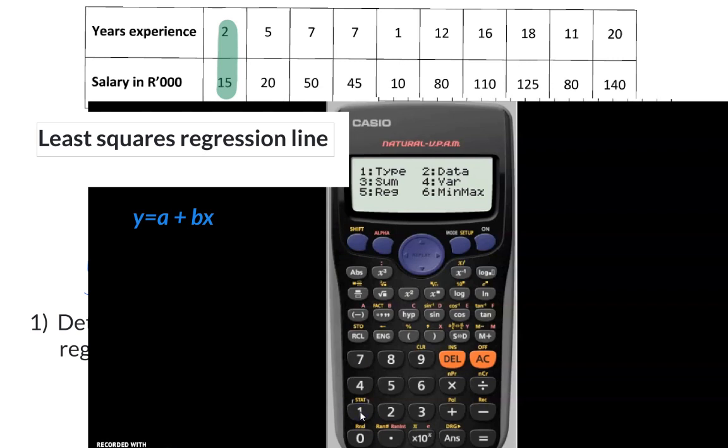Once again, I receive many options, and option 4, the variance option, will be for our grade 11 work with one set of data, but now we're going to choose option 5, because we are determining the regression line.